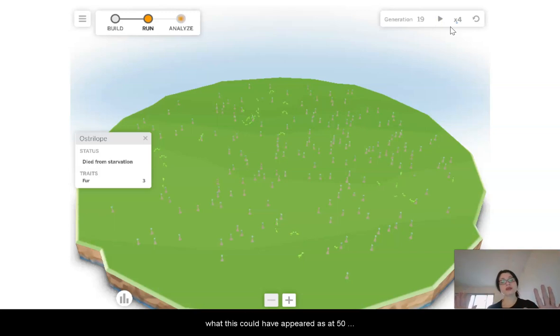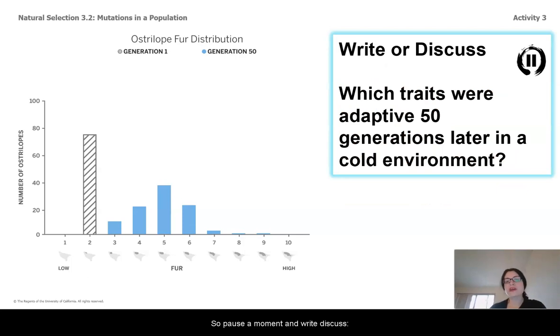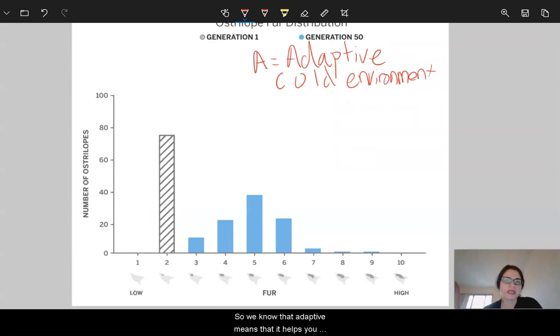So, I'm going to now look at the diagrams of what this could have appeared as at 50 generations. And we're actually going to back up and look at generation 5 as well. This histogram shows what the population could have looked like after 50 generations, and the environment had become cold, and they can mutate. So, pause a moment, and write discuss. Which traits were adaptive 50 generations later in a cold environment? So, we know that adaptive means that it helps you survive in your environment. Well, after 50 generations, any traits that we see still present is probably an adaptive trait.